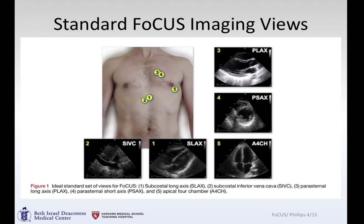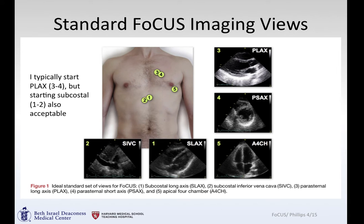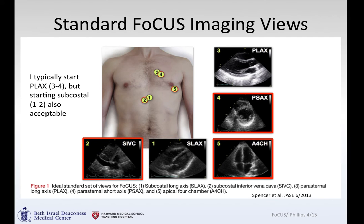As a review, these are all the standard views that you can get. We like to start with the parasternal long; starting with the subcostal is also acceptable. Today we'll look at the parasternal short, apical four-chamber and associated views, and also the IVC which we hinted at last time.